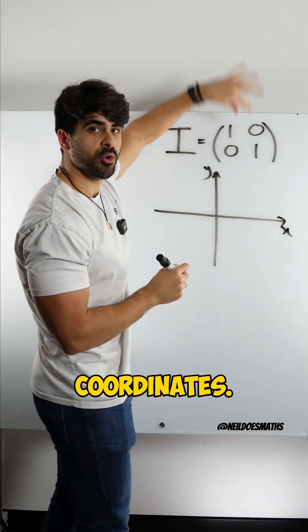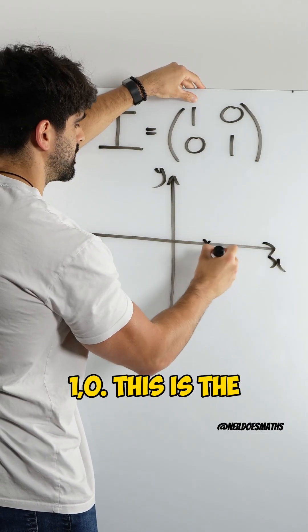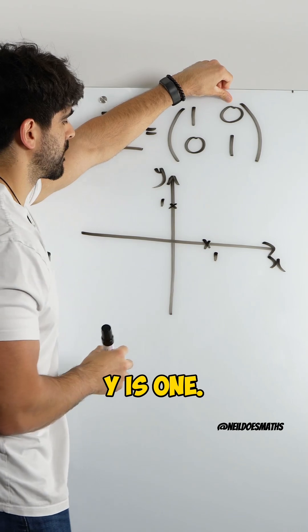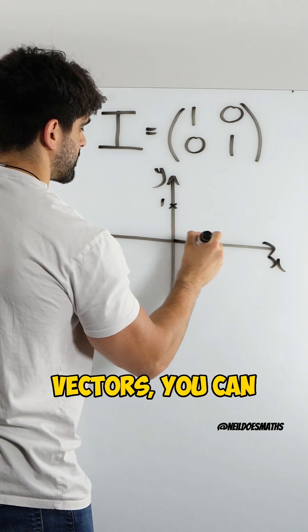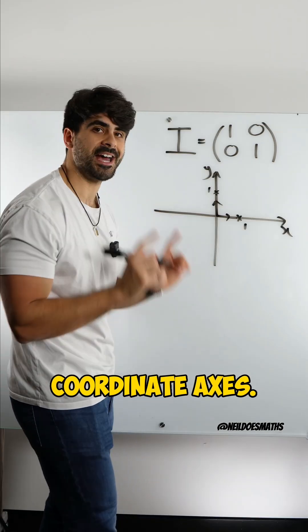These just represent coordinates. x is 1, y is 0. 1, 0. This is the y-axis, x is 0, y is 1. And with these vectors you can define the whole coordinate axes.